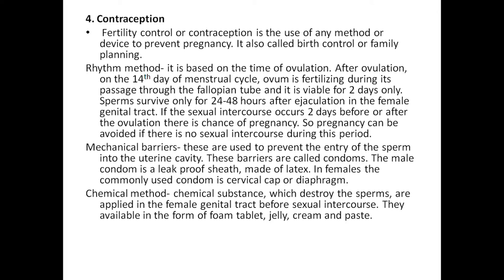The first method is the rhythm method, based on the time of ovulation. After ovulation on the 14th day of the menstrual cycle, the ovum is fertilized during its passage through the fallopian tube, and it is viable for only 2 days. Sperms are alive for only 24 to 48 hours after ejaculation in the female genital tract. If sexual intercourse occurs 2 days before or after ovulation, there is a chance of pregnancy.